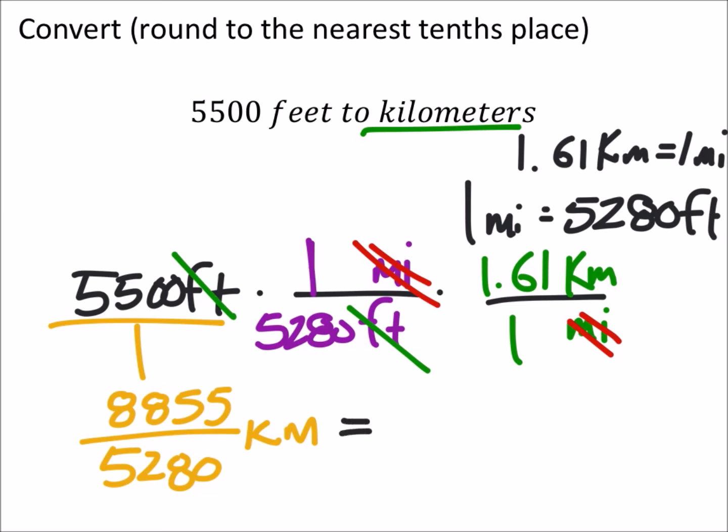And as a decimal, I got 1.677. We don't need any more decimals than that, even though my calculator shows it. Because we're rounding to the nearest tenths place, which is the sixth. So, this seven right here is bigger than five. And we end up with 1.7 kilometers rounded to the nearest tenths.